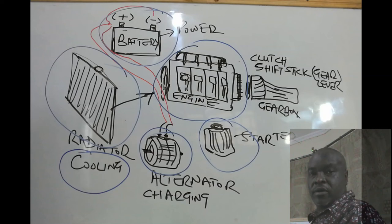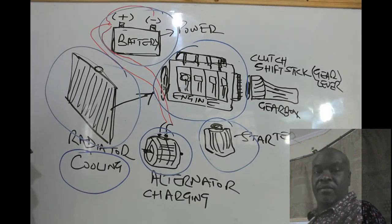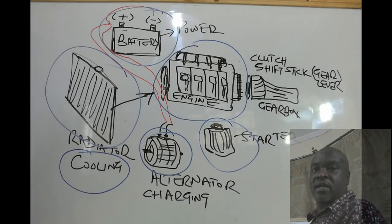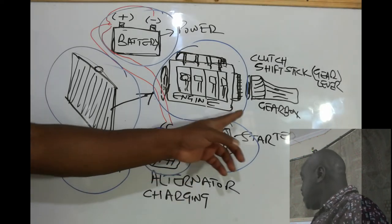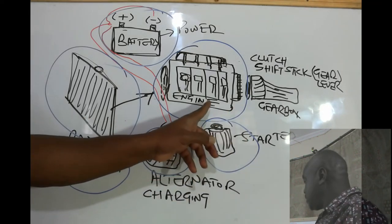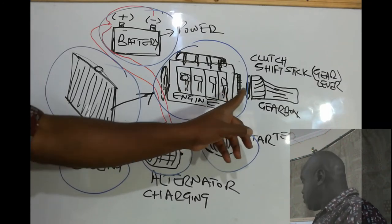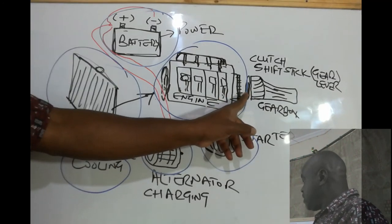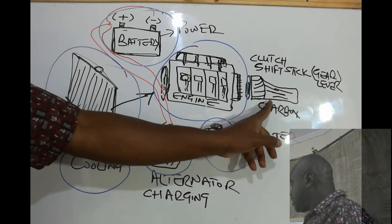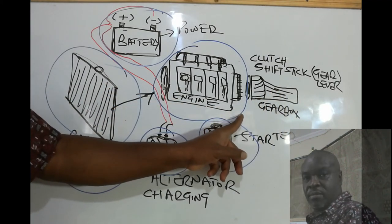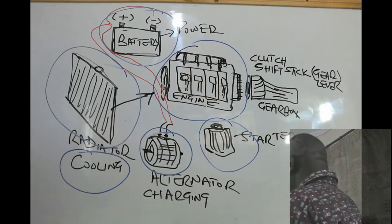The other important part is the gearbox. The gearbox receives the power and motion from the engine and transfers it to the wheels for the car to start moving. The main work of the gearbox is to connect the rotation of the engine to the wheels.